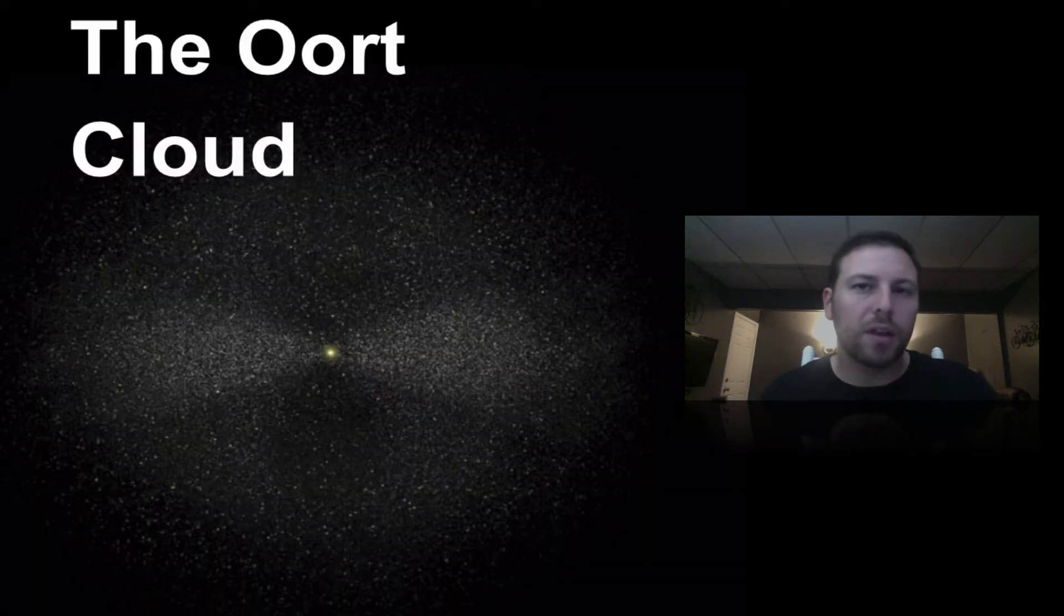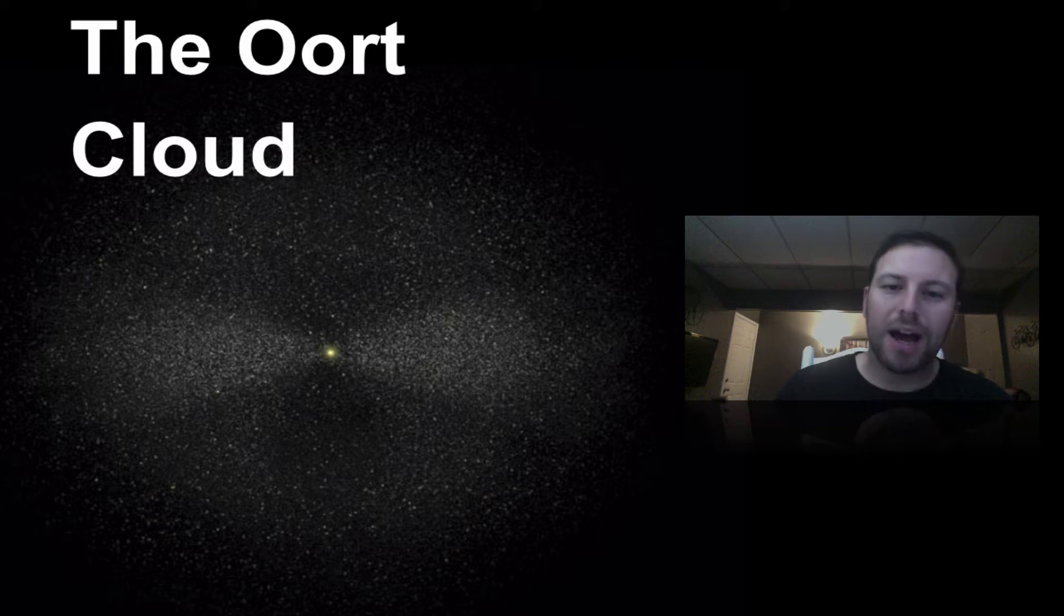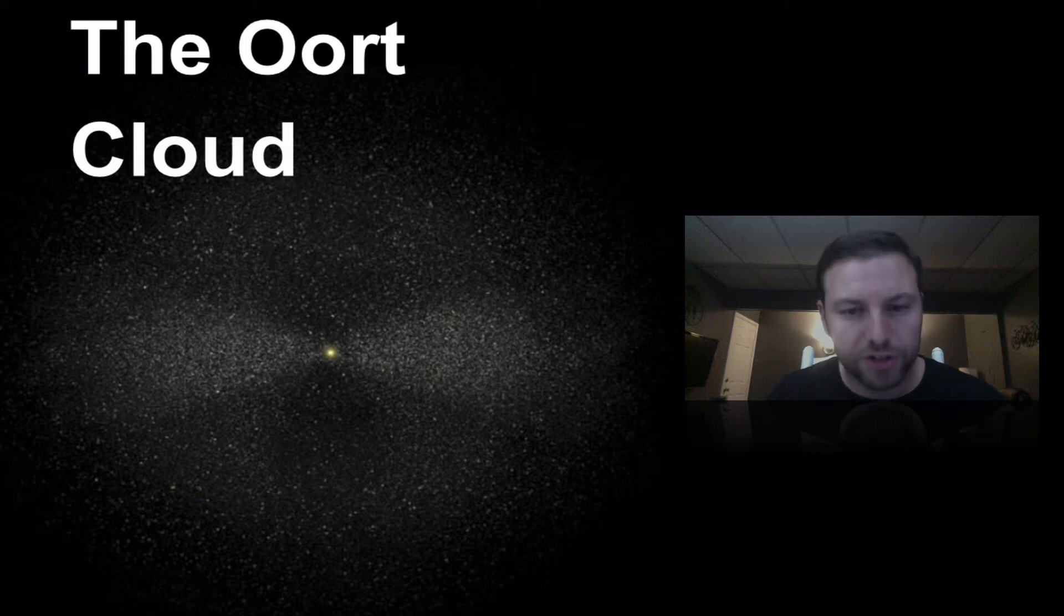Here's the Oort Cloud. This is that region that extends out into our solar system very far out the farthest reaches of our solar system. Some people believe it's like a light year out. Some people think it's three light years out but it is this region of icy objects that extending the farthest reaches of our solar system.